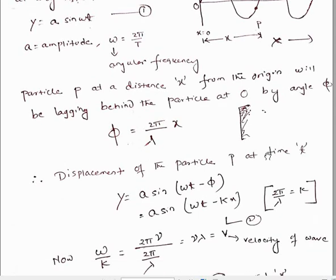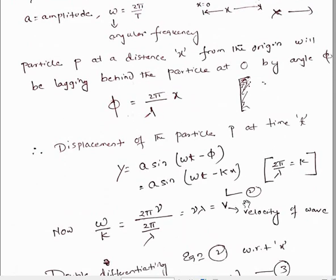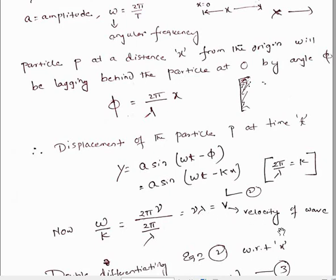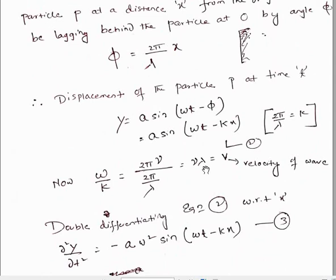Now, if we write ω/k — since ω = 2π·frequency and k = 2π/λ — then ω/k = frequency × λ, which equals v, the velocity of the wave.